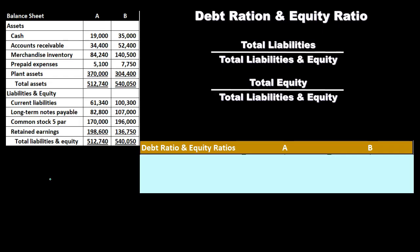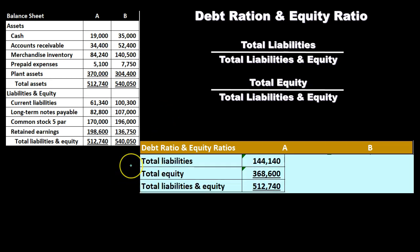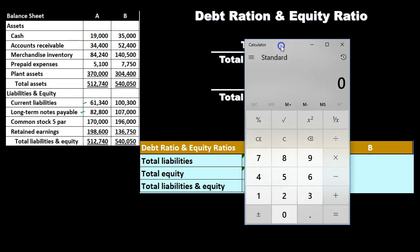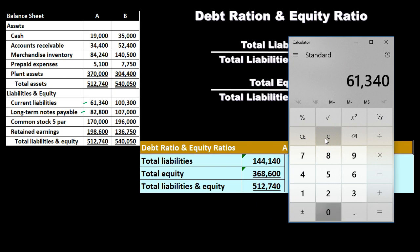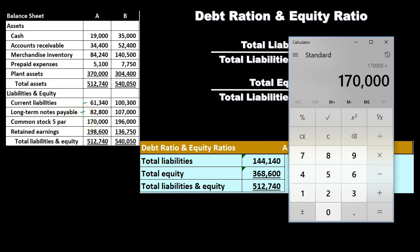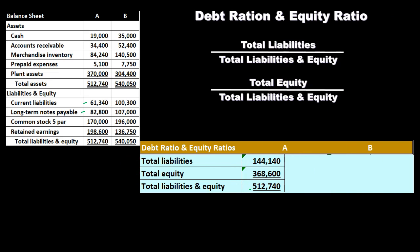Let's take a look at an example. All we need is the balance sheet for this calculation — assets, liabilities, and equity — and we're going to do this for companies A and B. For company A, total liabilities equals 61,340 plus 82,800, covering both current and long-term portions. Equity is represented by 170,000 in common stock and 198,600 in retained earnings, giving total equity of 368,600.